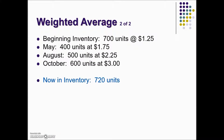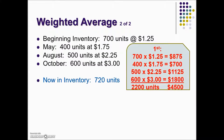We have another example where beginning inventory was 700 units at $1.25, then 400 units at $1.75 and continues on. We currently have 720 units on hand and we're calculating the inventory value using the weighted average method. So we need to add up the total number of units purchased during this period of time and the total cost. Adding up the 700, 400, 500, and 600 units gives us 2,200 units.